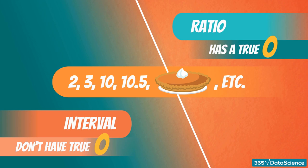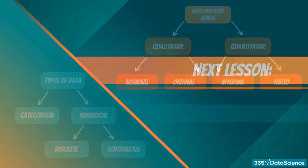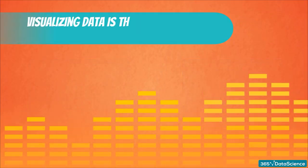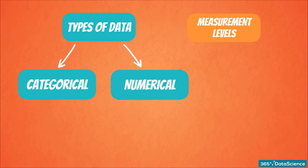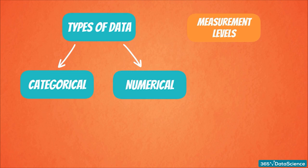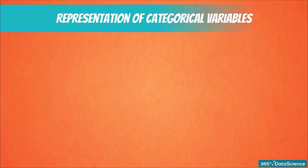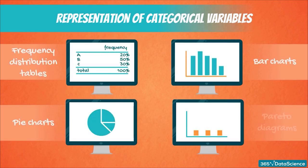We've quickly gone through the types of data and the measurement levels. Stick around to see the types of graphs that are used on a daily basis. Visualizing data is the most intuitive way to interpret it, so it's an invaluable skill. It is much easier to visualize data if you know its type and measurement level. There are two types of variables: categorical and numerical. In this video, we will focus on categorical variables. Some of the most common ways to visualize them are frequency distribution tables, bar charts, pie charts, and Pareto diagrams.